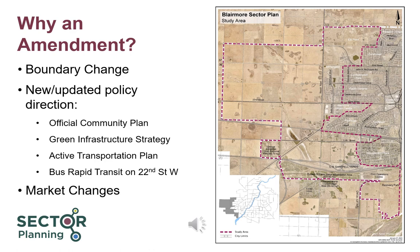This includes the new Official Community Plan, the Green Infrastructure Strategy, the Active Transportation Plan, and plans for bus rapid transit along 22nd Street West. Finally, an amendment was needed to respond to changing market conditions, including an identified need for more commercial lands on the west side of the City.